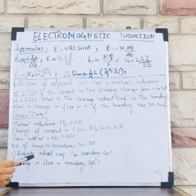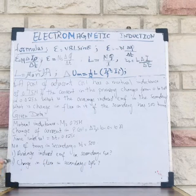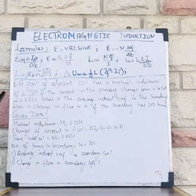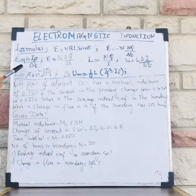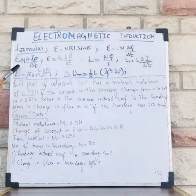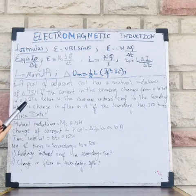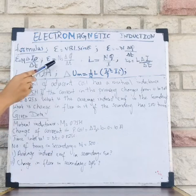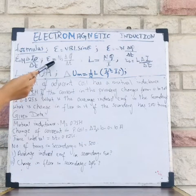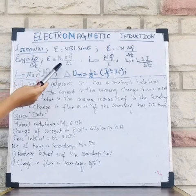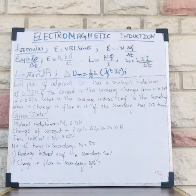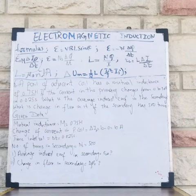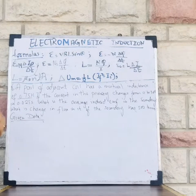Let's choose formulas according to the demand. For the first part, I can use the formula: epsilon equals M times (delta I_p divided by delta t). For the second part — finding the change in flux in the secondary — the suitable formula is: epsilon equals N_s times (delta phi divided by delta t), from which I can easily find the change in flux.